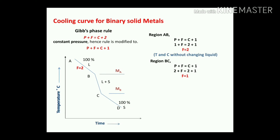For region B to C, applying the Gibbs phase rule: P plus F equals C plus 1. Here there are two phases, as point B marks the start of solidification — the formation of nuclei from the higher melting point metal, which is metal A. So 2 plus F equals 2 plus 1, giving F equals 1. This means only temperature is changing, without a change in the liquid or solid phase composition. Temperature is the only varying parameter in the B to C region.